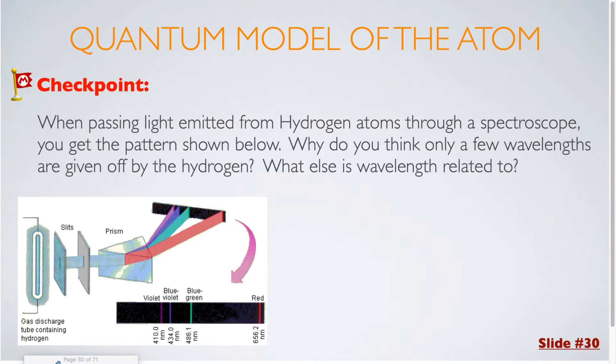We know from our previous videos that wavelength is also related to energy and frequency. If the hydrogen atom is only giving off specific colors or specific wavelengths, that means it is only giving off specific energies. The electron must be transferring between very specific places inside of the atom, which would give off just these energies and not the energies found in between. This tells us something about the structure of the atom itself.